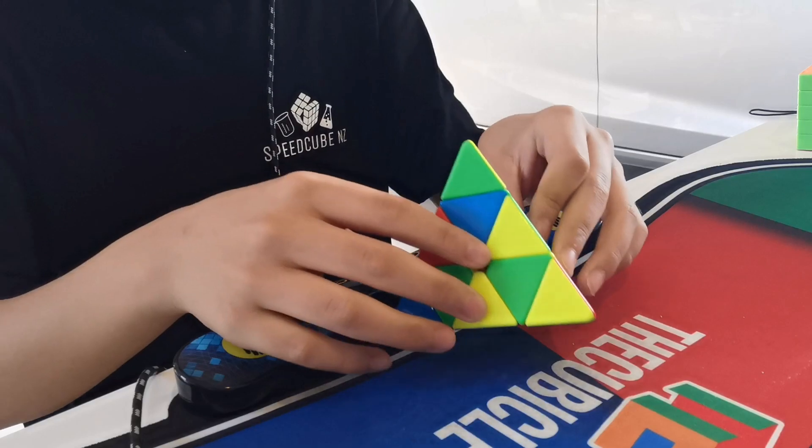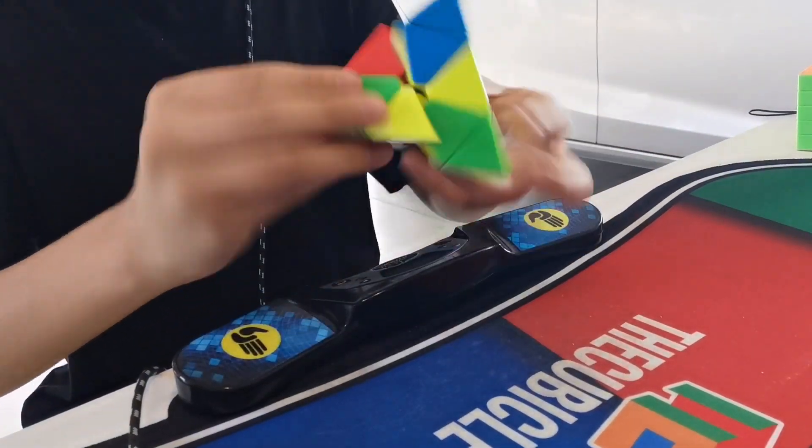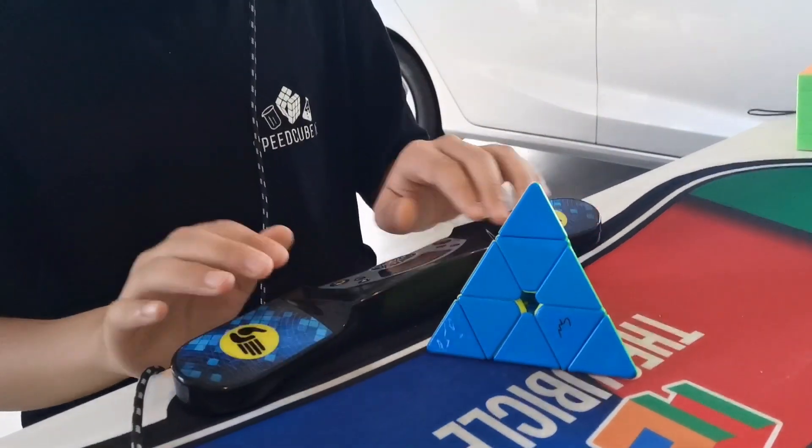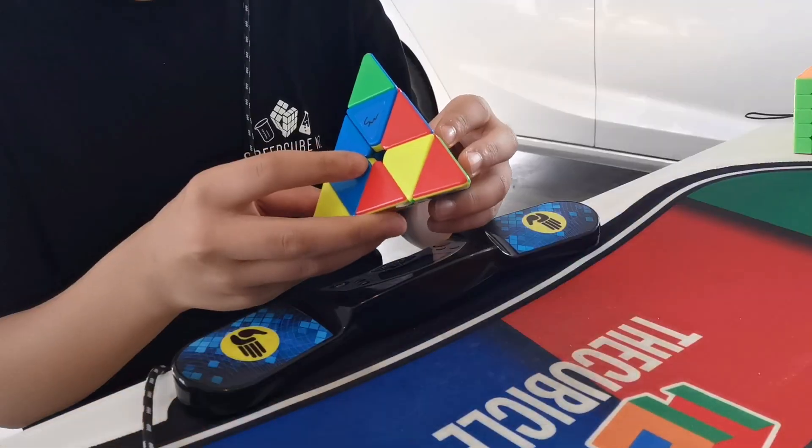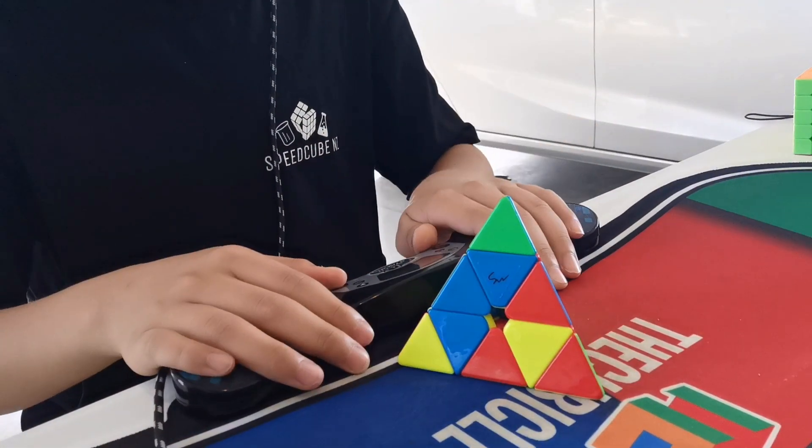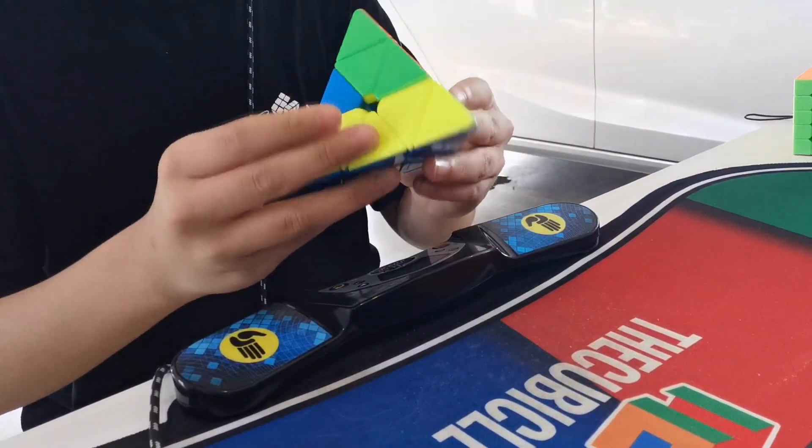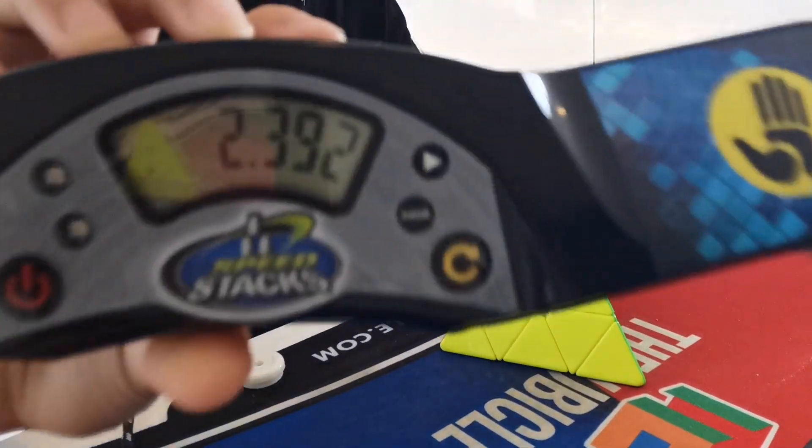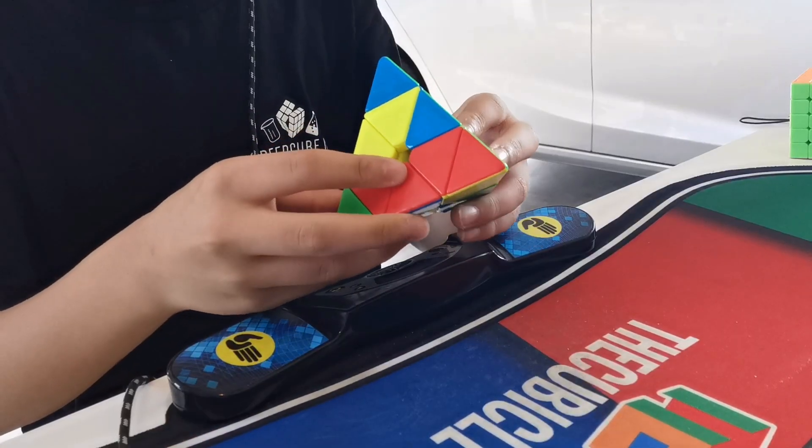Which are: 1. subscribing to my channel, 2. liking this video, 3. joining my Discord (link in the description), and 4. posting a question in Q&A questions in my Discord server. This giveaway is sponsored by SpeedCubeShop.co.nz, which unfortunately means this is a New Zealand only giveaway.